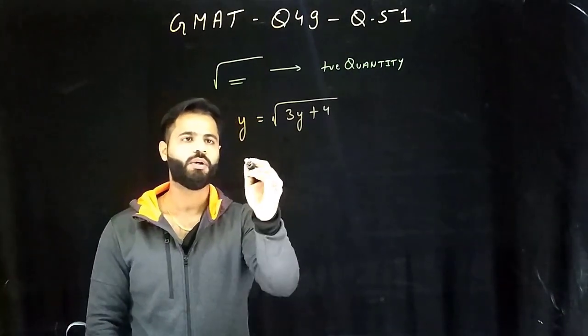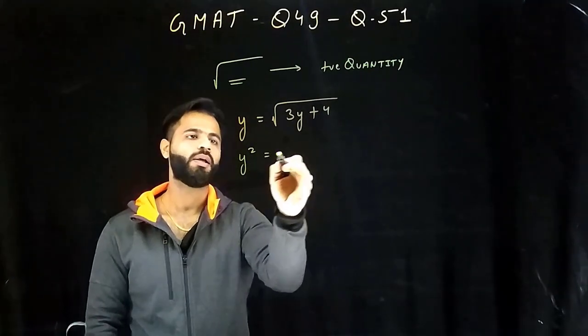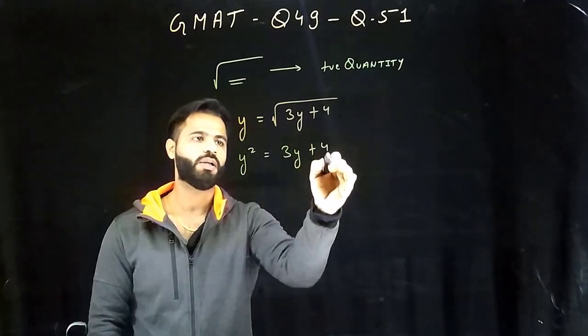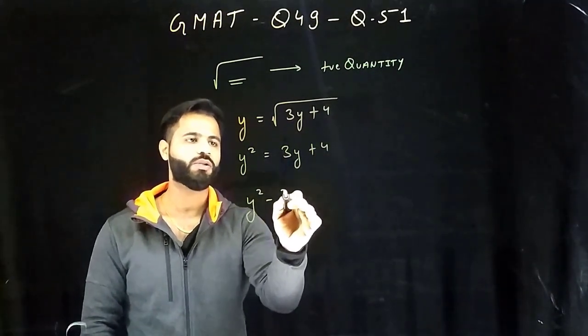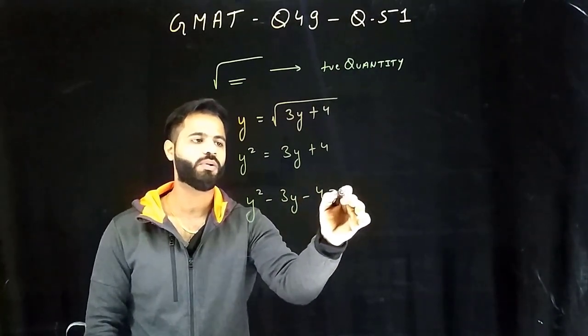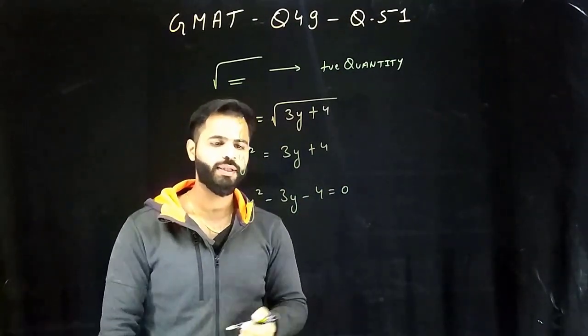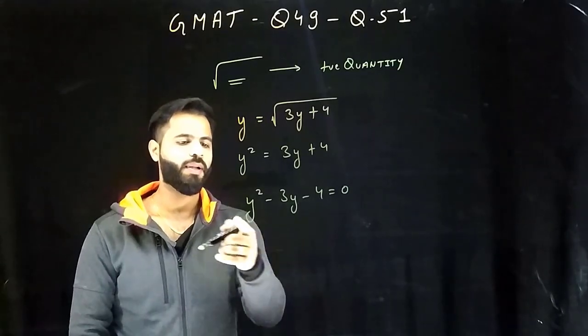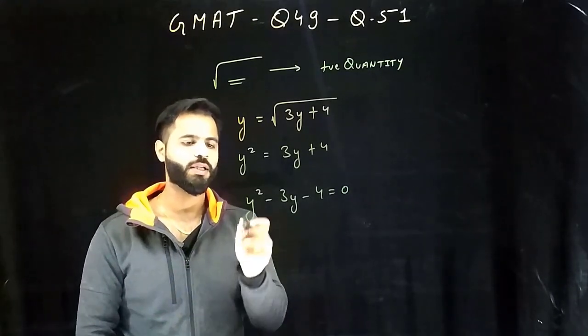So we need to tell the product of all the possible values of y. What a person does over here is simply square it: y square equals to 3y plus 4, and finally y square minus 3y minus 4 equals to zero.